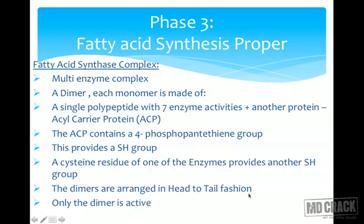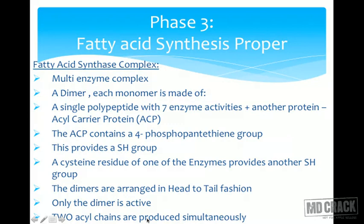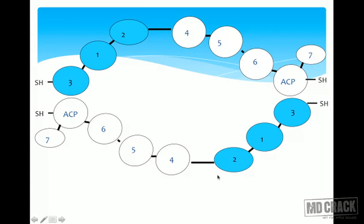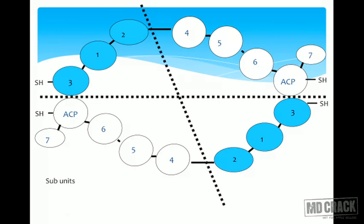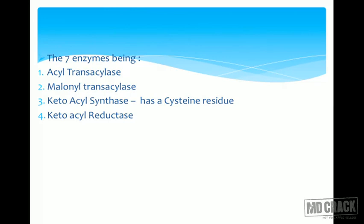Only the dimer is active, and two palmitic acid chains are produced simultaneously. One monomer has seven enzyme activities and one ACP; the other monomer has the same. They are arranged head-to-tail. The functional division and the subunit division are different — the dimer functions as one unit while structurally it is two subunits.